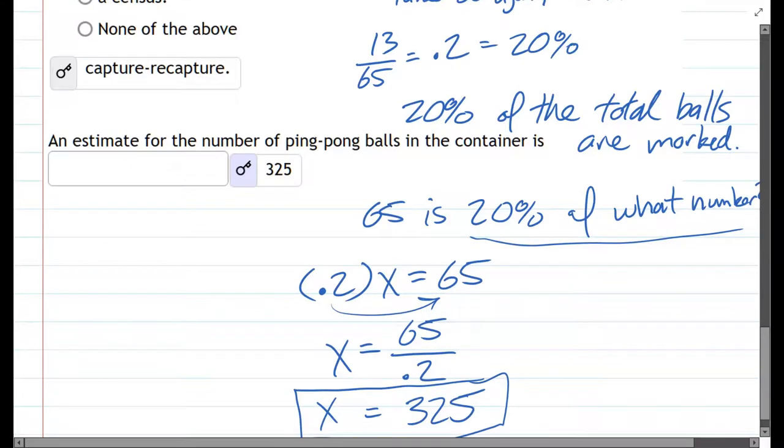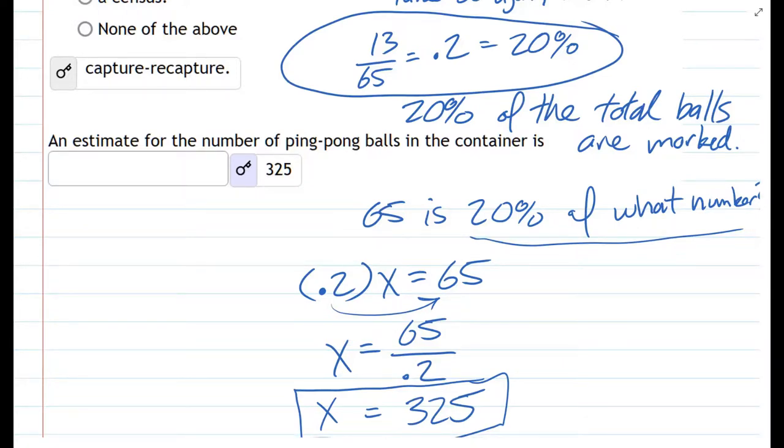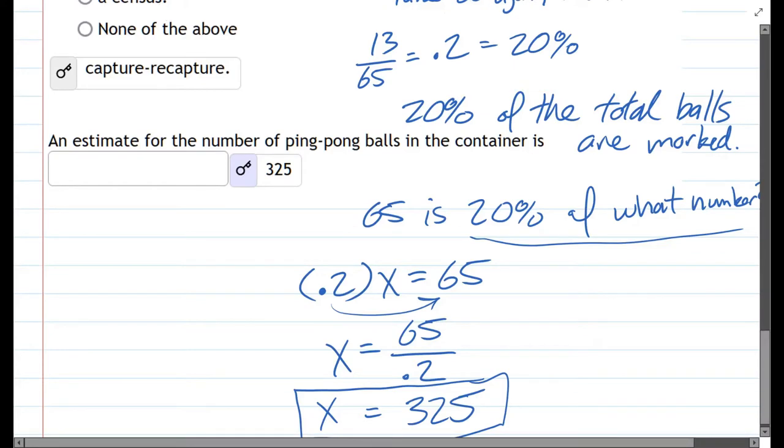We noticed that when we went back in and pulled out 65 ping-pong balls a second time, that 20% of them are marked, which means that we marked about 20% of the total number. And so we tried to figure out what that total number was. And we just divide it by 20% or whatever number you would have gotten in your problem right there.